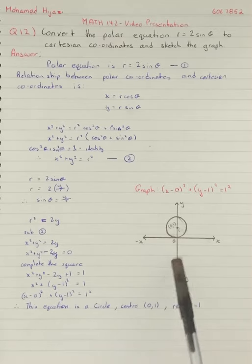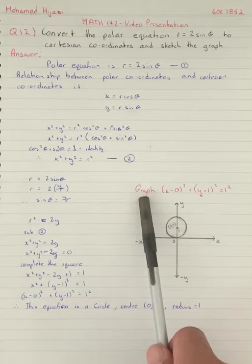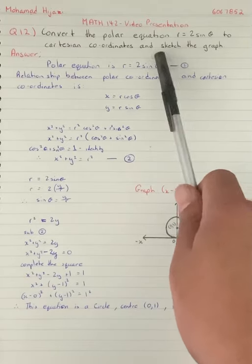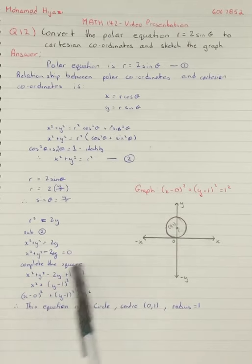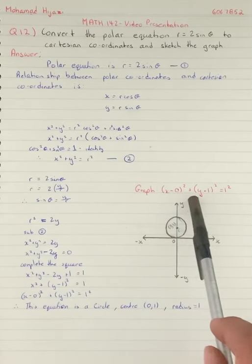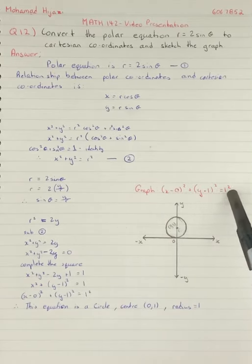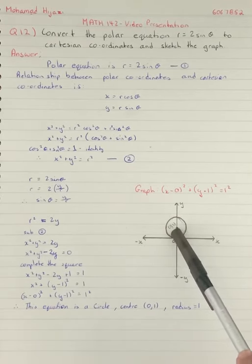Now that we know this, we can graph the equation as requested. We graph (x - 0)² + (y - 1)² = 1, with center at (0, 1).